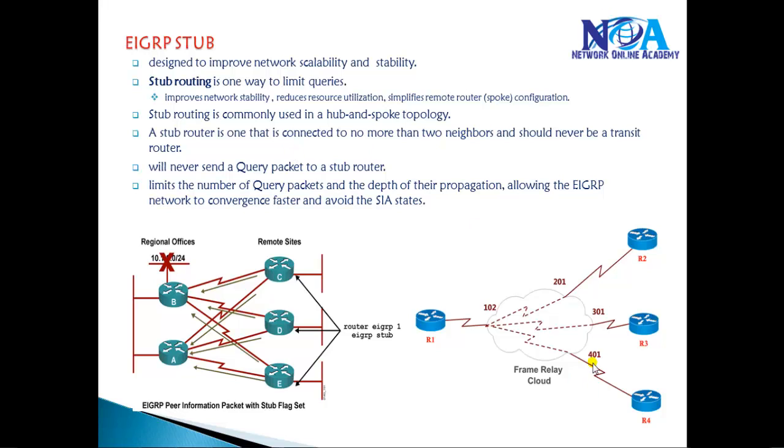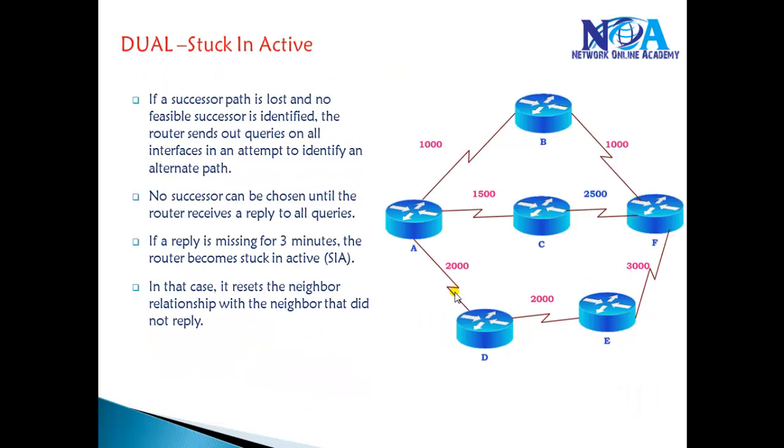Let's go back to an example. In previous videos we saw the stuck in active state. Stuck in active is a state where the router lost its successor and there is no feasible successor. The router is going to send out query messages and expect a reply about the destination, like how to reach F.